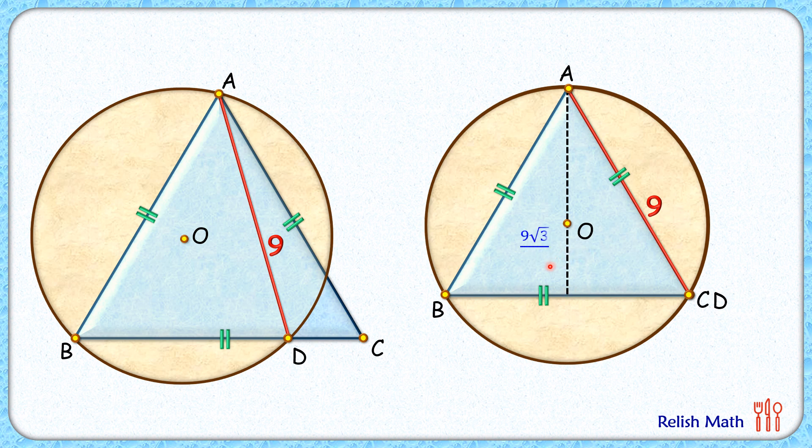The AO length, that's the radius of the circle, by formula will be 2/3 of the height. Thus AO = 2/3 × 9√3/2 = 3√3 cm and that's our answer.